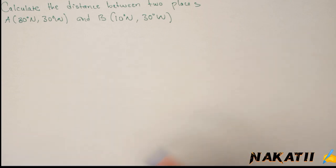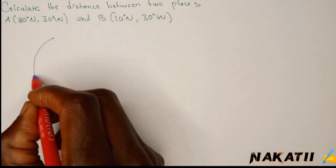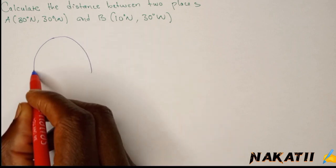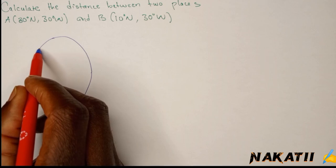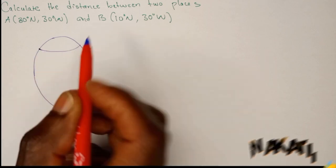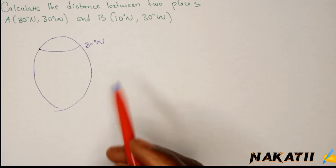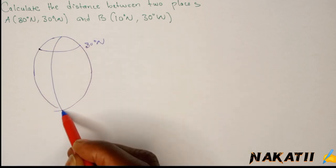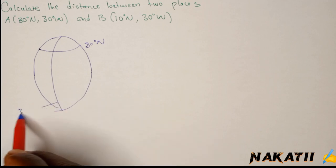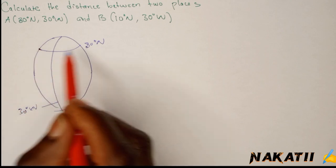When we come up with a diagram of a sphere, we can pick a latitude. Let's say this is the 80 degrees north. Then we pick a longitude and label it as 30 degrees west. At the intersection of latitude and longitude, that's where point A is, so point A is somewhere there.